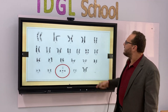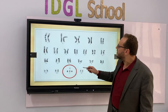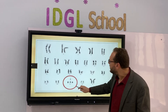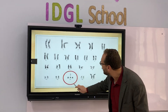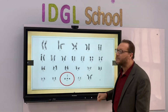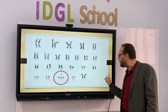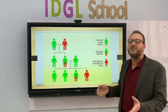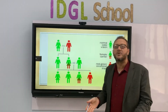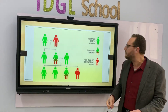Another case we studied before is a disturbance related to chromosome number 21, which is named Mongolism or Down syndrome. Today we are concerned about the journey of the X chromosome from one generation to another.